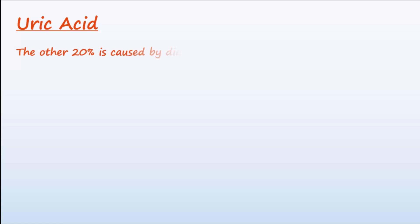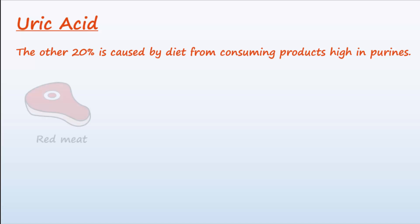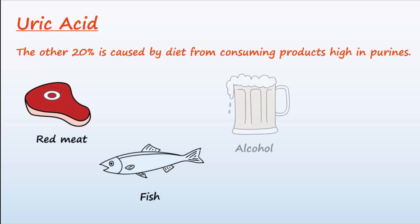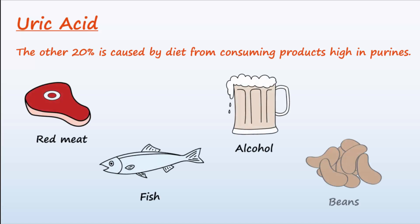The other 20% comes from the diet, and is increased by consuming products high in purines, like red meat, oily fish, alcohol, and beans.